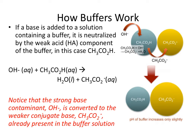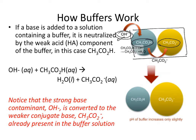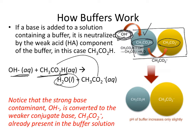Let's look at acetic acid and its conjugate base acetate — a very common buffer system. If we add a hydroxide contaminant like sodium hydroxide, you first decide which component of the buffer reacts. Since bases react with acids, the acid component reacts with the base contaminant, producing water and the conjugate base. The strong base has been converted to a weak base, which has a lesser effect on pH.